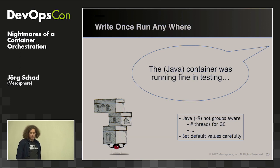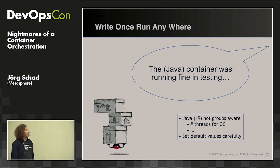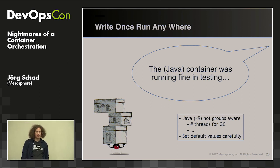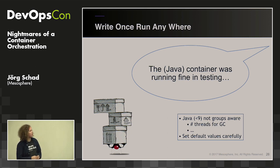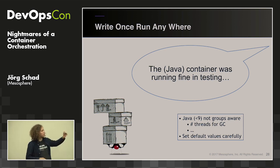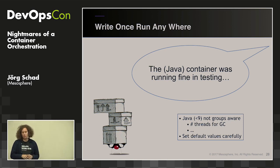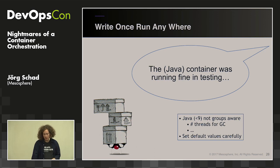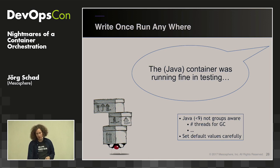Speaking of Java applications: Java has the 'write once, run anywhere' promise — the same promise containers give us. Unfortunately this isn't really the case with Java, or .NET, or other technologies that look at the underlying environment. This is mainly because Java before version 9 is not cgroups-aware, which means you should set your JVM parameters carefully.